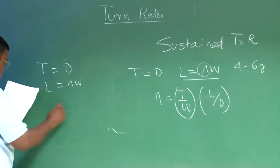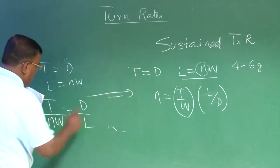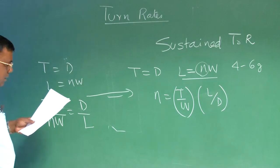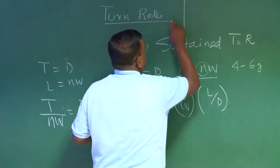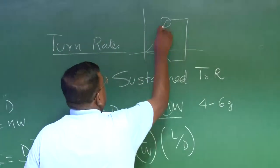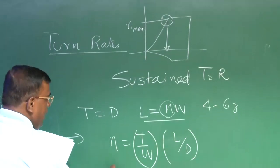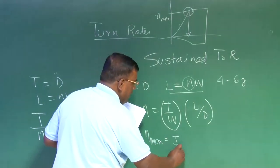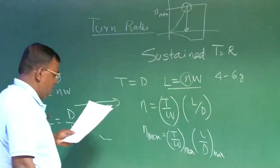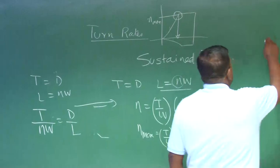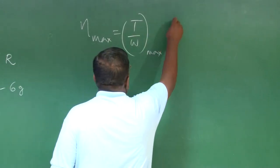So from here, I can write N equal to T by W into L by D. Now, if you are trying to maneuver such that N equal to N max, because you are at T by W into L by D, so this is the corner speed, this is the corresponding speed. So then N max equal to T by W max and L by D max.